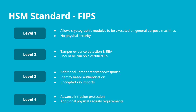This slide is a quick brief about the FIPS HSM standard. There are four levels. Level one talks about cryptographic modules that could be executed on general-purpose machines. Level two talks about tamper evidence detection and role-based access, and should be run on a certified OS. Level three talks about additional tamper resistance responses and encrypted key imports. Level four is where advanced intrusion protection and additional physical security requirements apply. Whenever you read about PCI standards, it specifies the FIPS level to be certified, and any HSM manual also talks about the FIPS standard it adheres to.